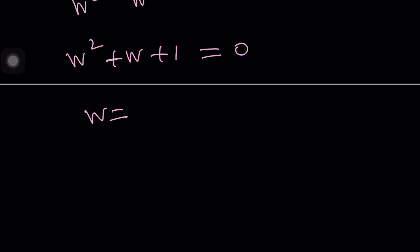Anyways, let me not give away too much. Using the formula gives us negative one plus minus the square root of three I divided by two. Okay. So those are the W values.